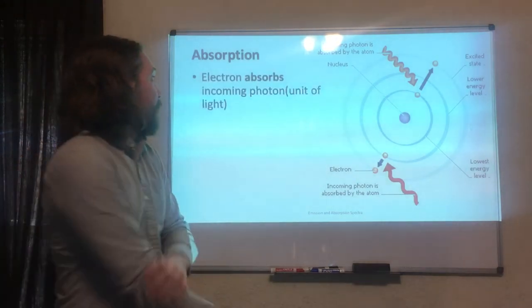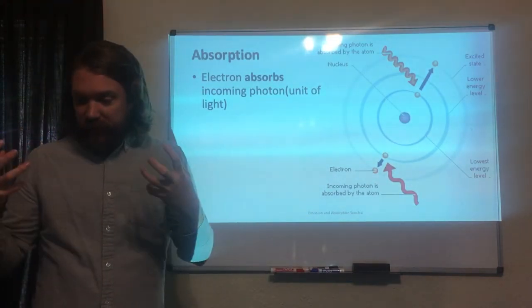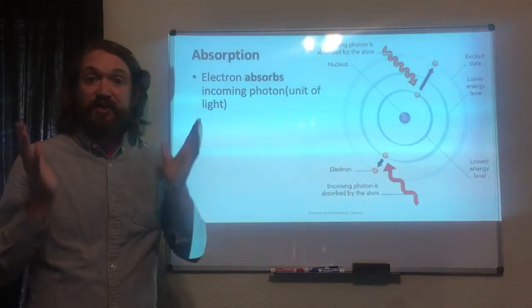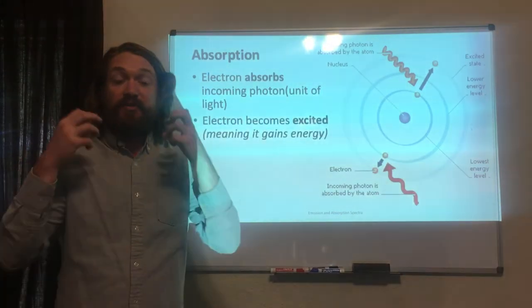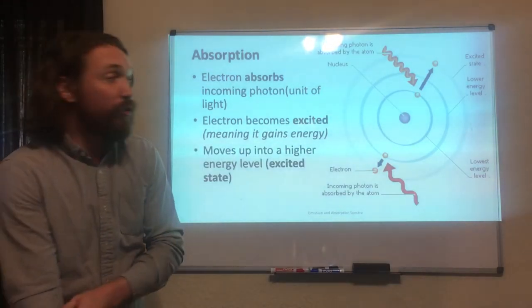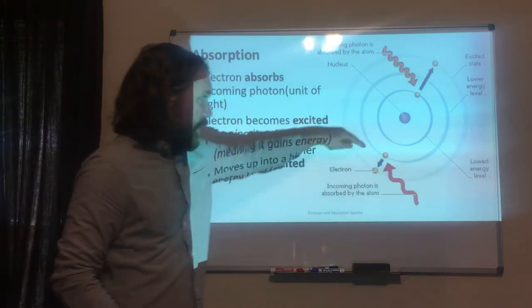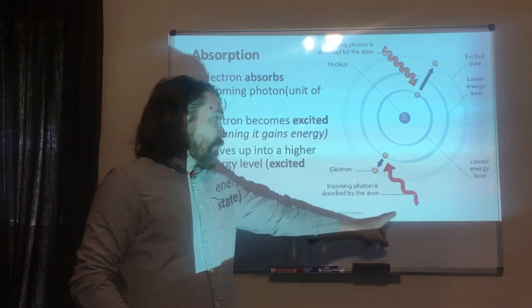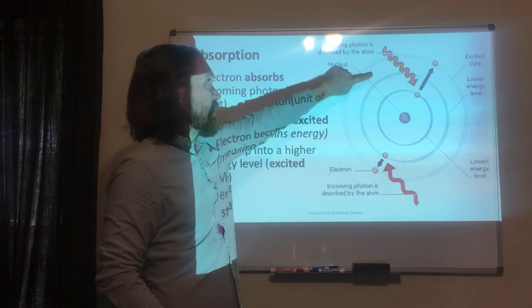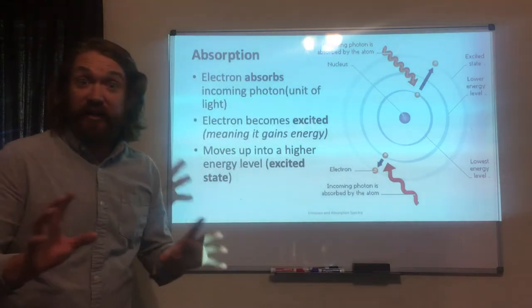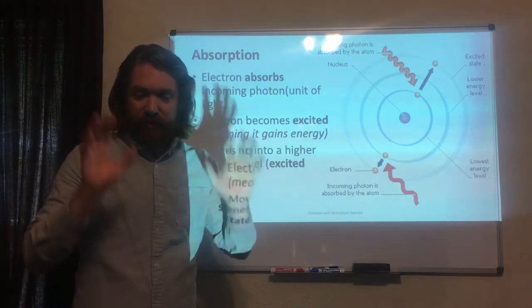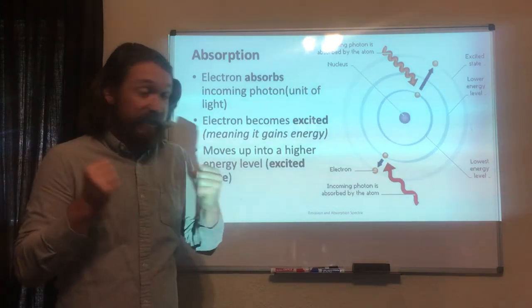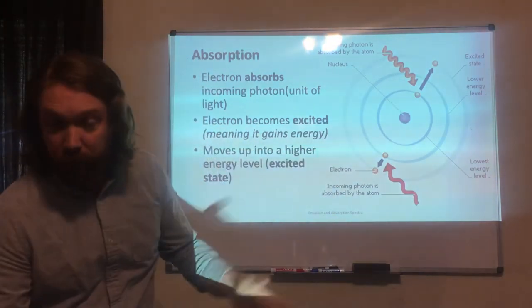This is called absorption. The electron absorbs light — we call that a photon, which is simply a unit of light. The electron becomes super excited and moves up to a higher level, jumping from the low level up to the higher level. You can even see the photon here — this light is orange, and this light is red. The lights are different colors, which will be important in a second.